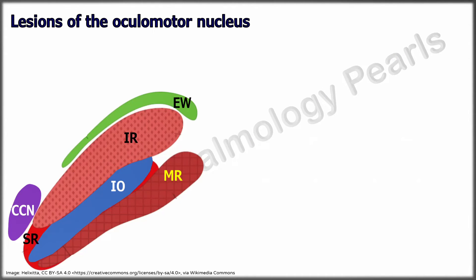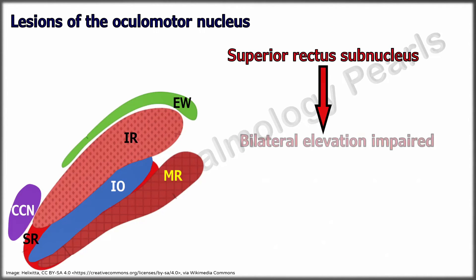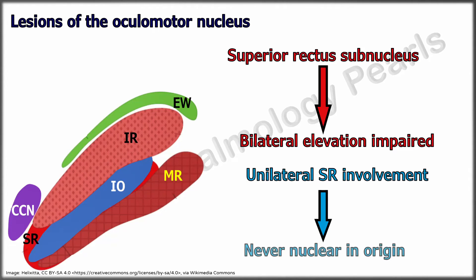When nuclear lesions affect the superior rectus subnucleus, elevation of both eyes is impaired. Since each superior rectus subnucleus also contains axons from the contralateral subnucleus, a unilateral superior rectus subnucleus lesion is effectively a bilateral lesion. Hence, a unilateral superior rectus involvement can never be nuclear in origin. However, this phenomenon can occur if there is involvement of the fascicles after leaving the nucleus.